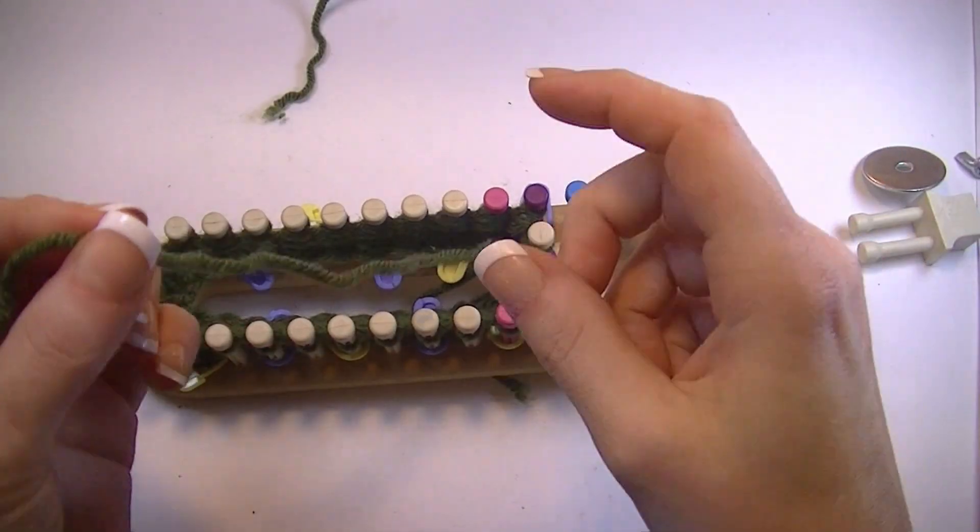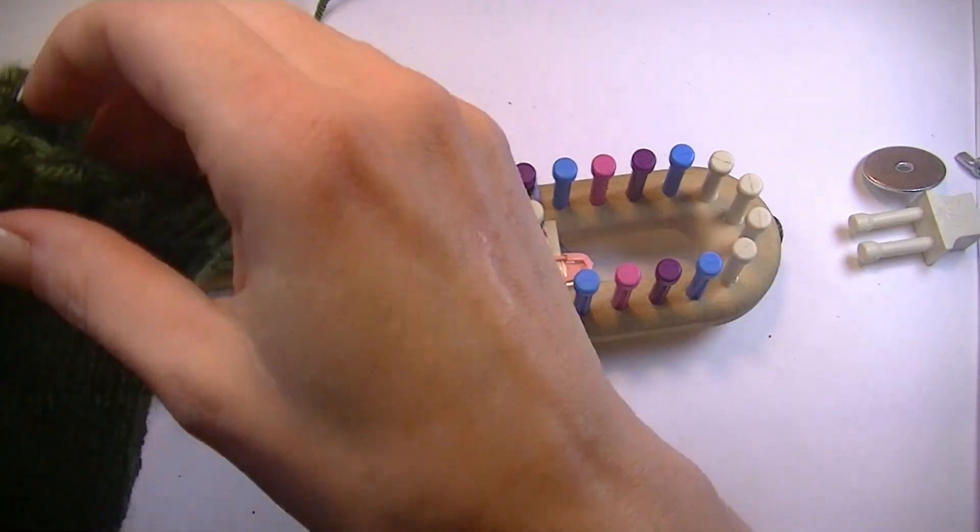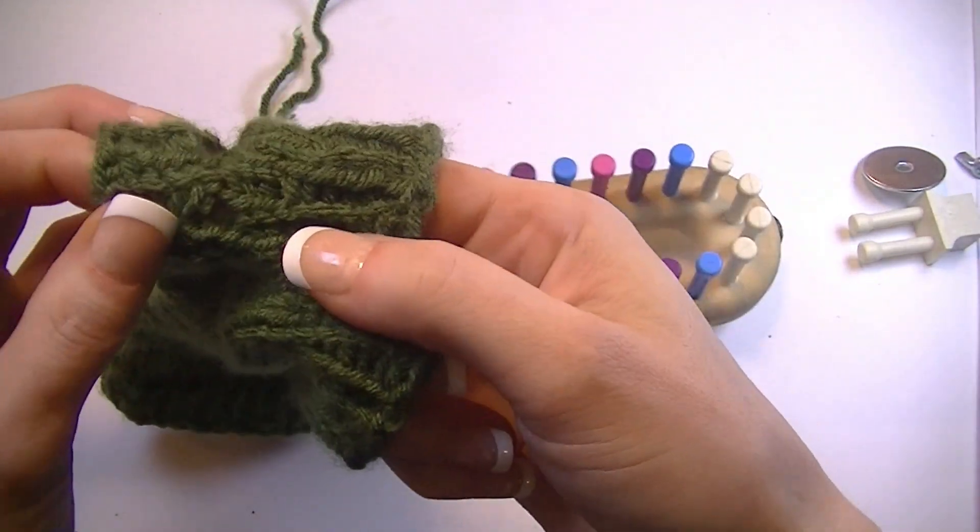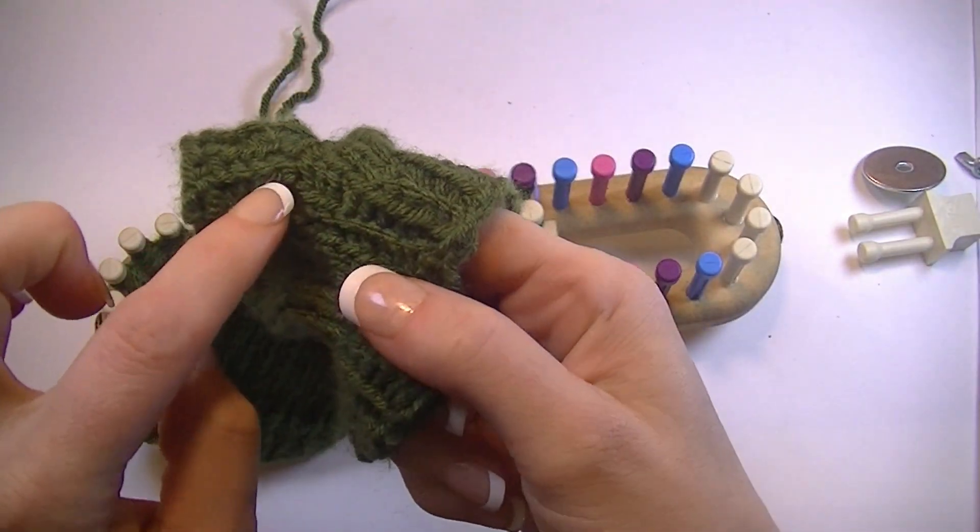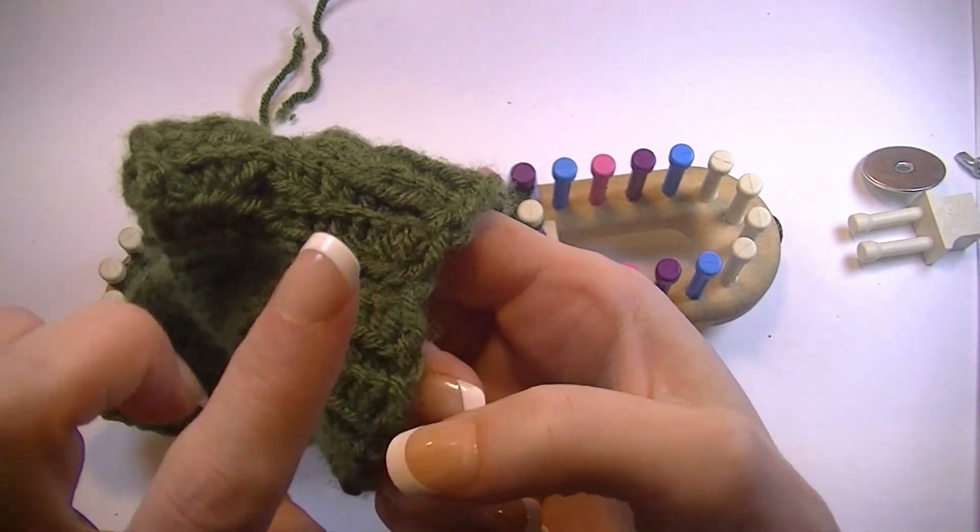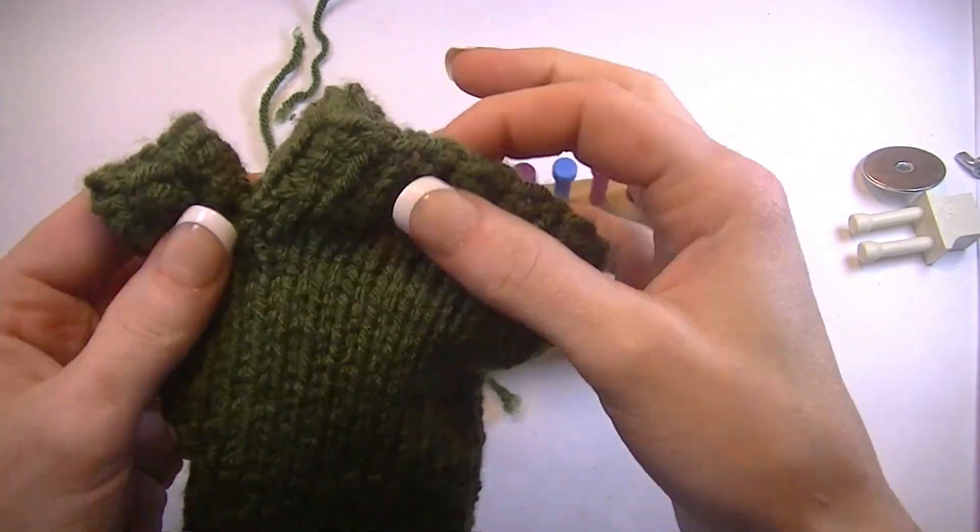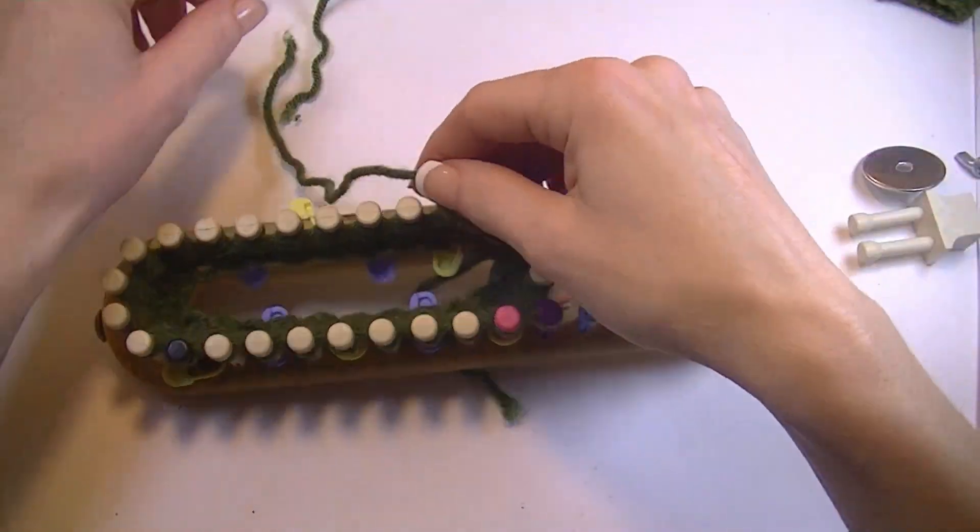Cut your working yarn. Make sure it's at least five inches long. You need enough so that you can close up the opening that you will end up with between the finger opening and the thumb opening.